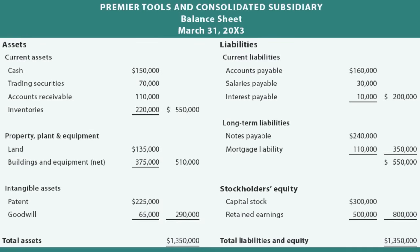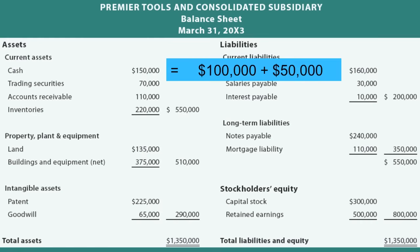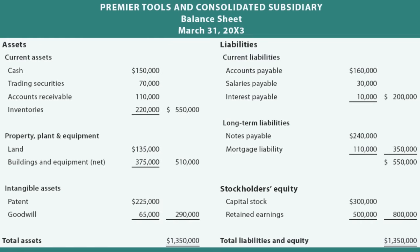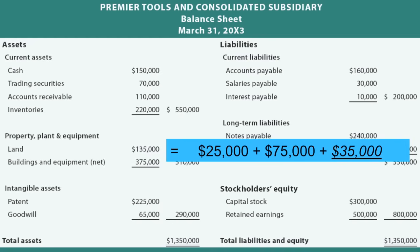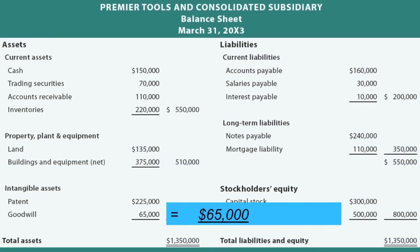Here's the consolidated balance sheet for Premier and its consolidated subsidiary Sledgehammer. Certain items are simply additive: the $150,000 for cash represents the $100,000 held by the parent and the $50,000 held by the subsidiary. Likewise for trading securities, accounts receivable, and inventories — you can do the math to add across on these. But let's look at land: the parent carried their land at $25,000, the subsidiary carried their land at $75,000, and we also know there was $35,000 of undervaluation, so land is reported at $135,000 — the book value from the parent, the book value from the sub, plus the markup to fair value implicit in the price the parent paid. Here's another unique asset: goodwill — the other $65,000 of the $100,000 purchase differential. It's not attributable to any specific asset or liability; it's simply reported as the balancing amount on the consolidated balance sheet.